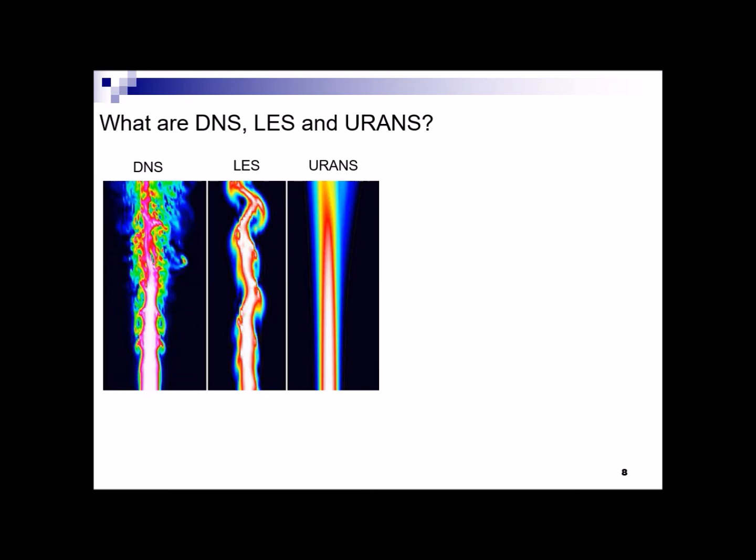DNS, which stands for Direct Numerical Simulation, in fact resolves all the turbulent scales without using any modeling techniques. However, for a turbulent flow at high Reynolds number, there are eddies of 10 micrometer with a frequency of order of 20 kilohertz. It means that to resolve these small scale eddies we need 10 to the power of 12 points with a time step of 100 micrometer. So it is virtually impossible to perform such a simulation nowadays.